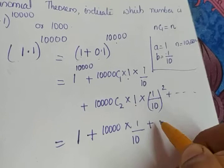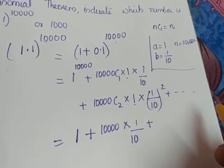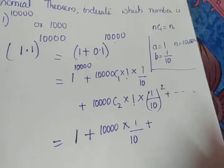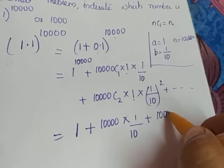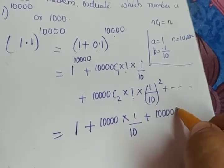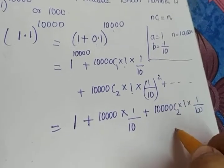Plus 10,000C2 is actually 10,000 into 9,999 divided by 1 into 2. We're not going to deal with all those higher values. We're just writing the value as 10,000C2 into 1 into 1 by 100, plus etc.